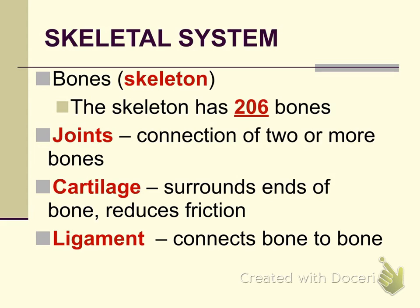The skeletal system is made up of four main organs. The major portion is the skeleton, which has 206 bones in the adult human. Joints are a connection between two or more bones. Cartilage is found at the ends of bones and its job is to reduce friction. Ligaments are organs that connect bone to bone and are made up of dense connective tissue. The cartilage surrounding the ends of bones is made up of hyaline cartilage.